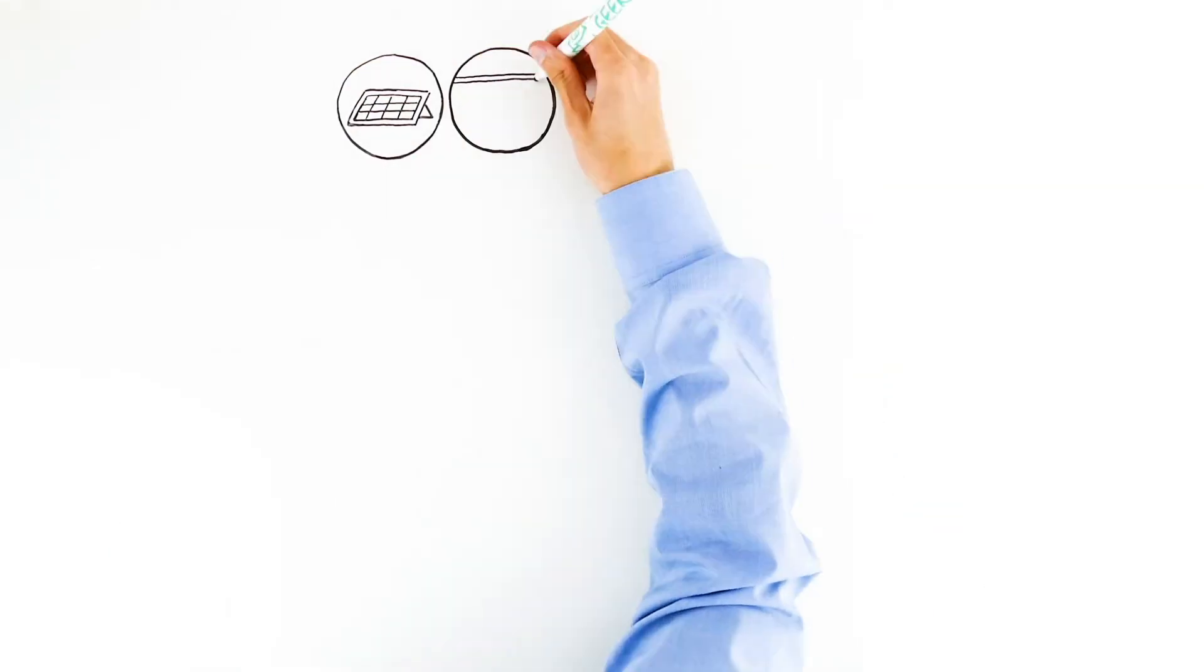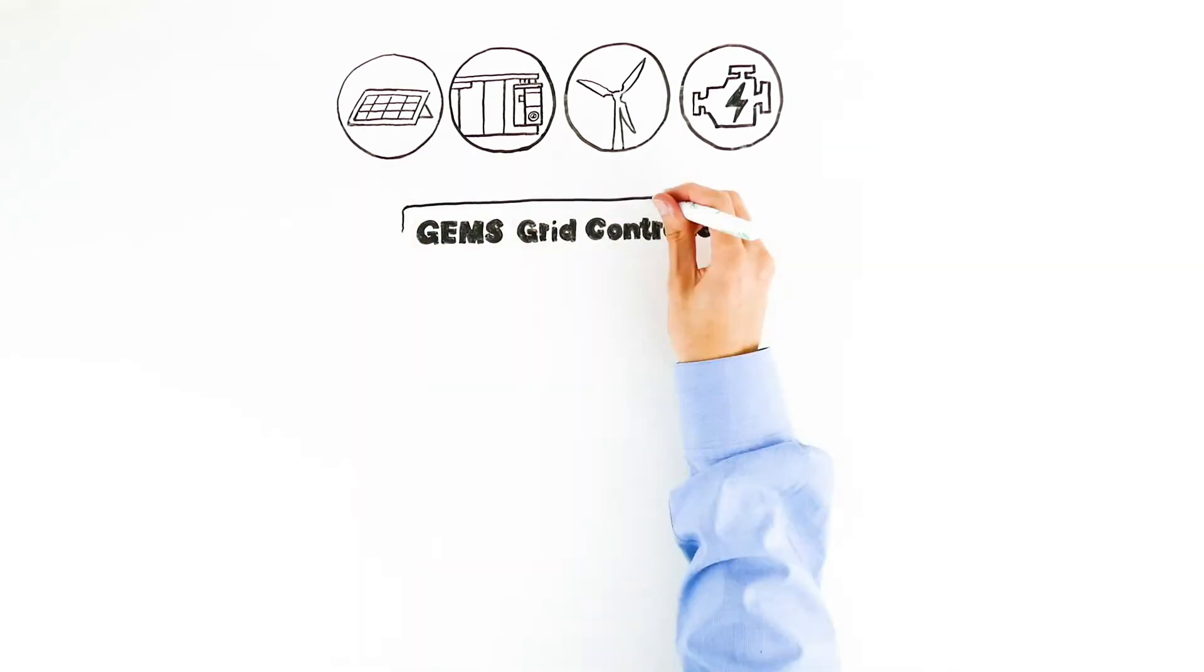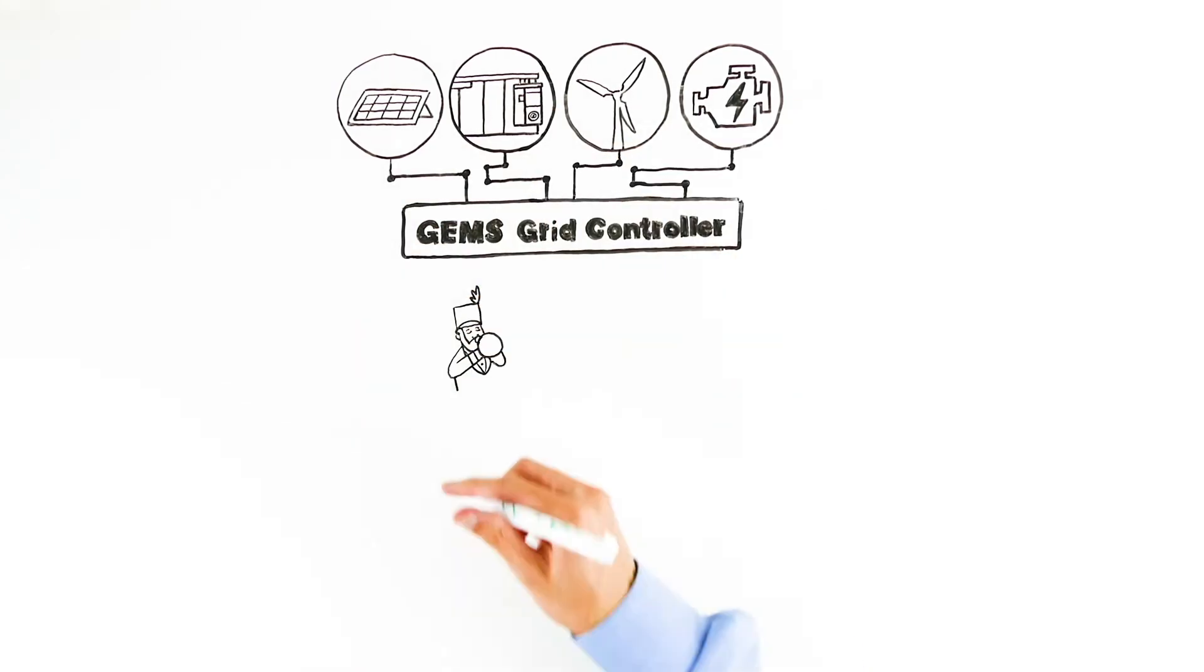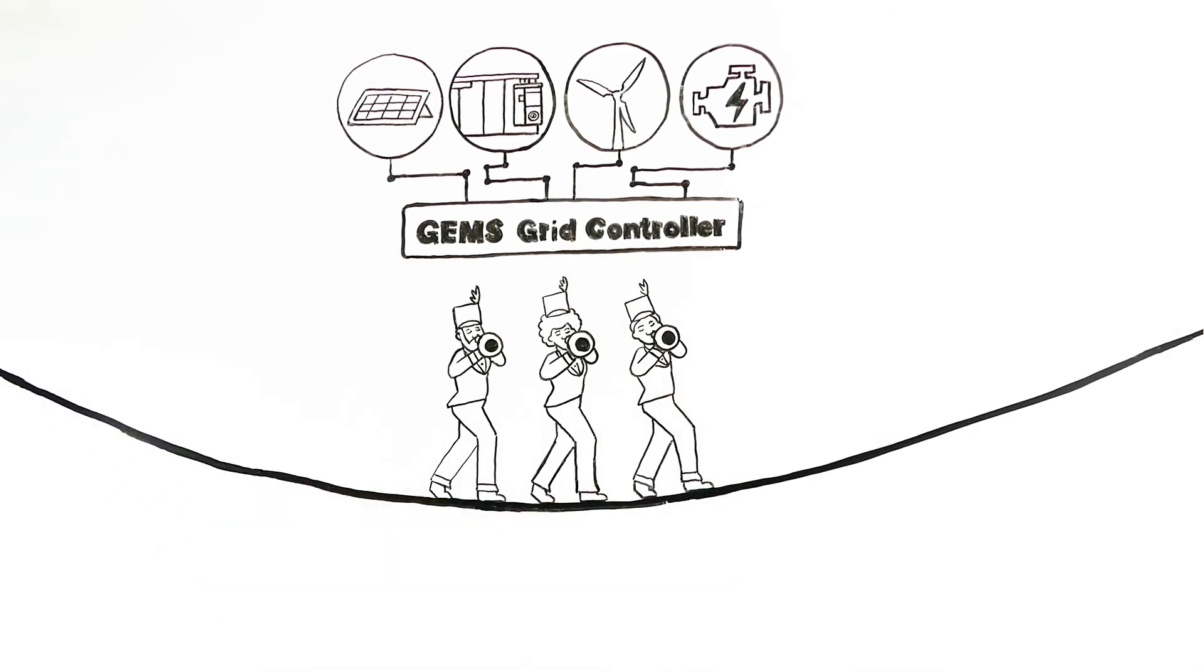By dispatching assets according to forecasted needs within the context of individual unit commitments and constraints, the grid controller maximizes performance and maintains a consistent balance between supply and demand. It also creates a more stable grid while reducing fuel and maintenance costs.